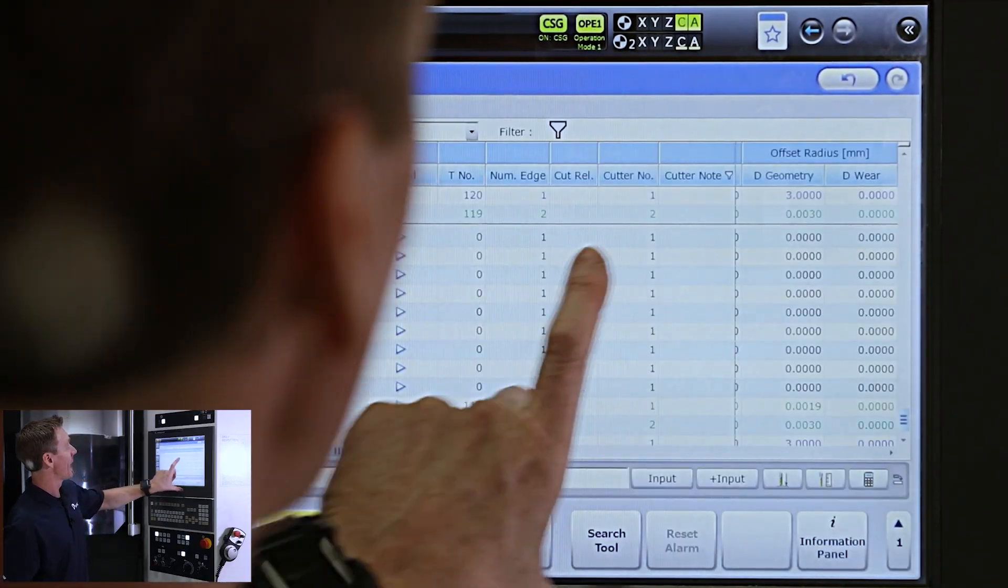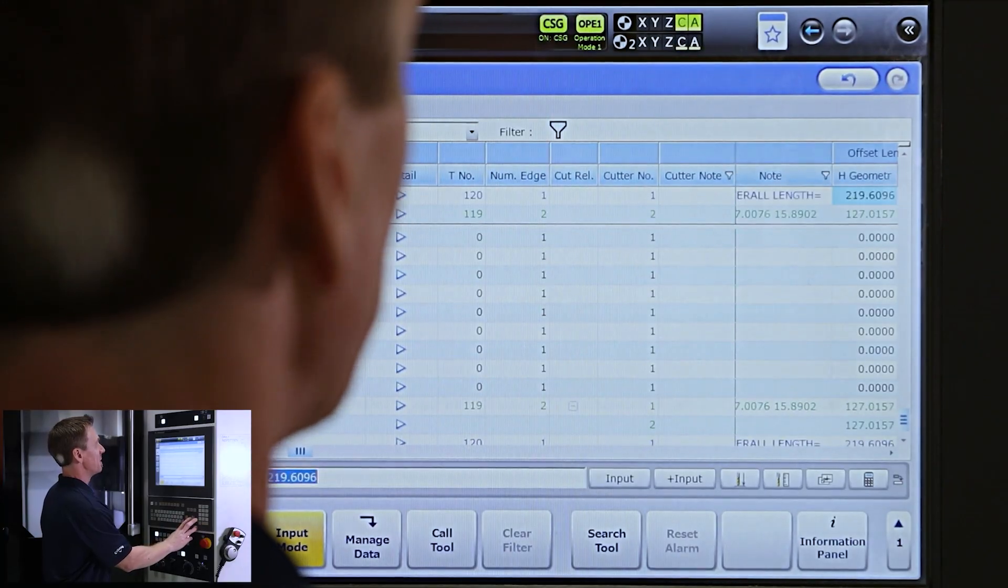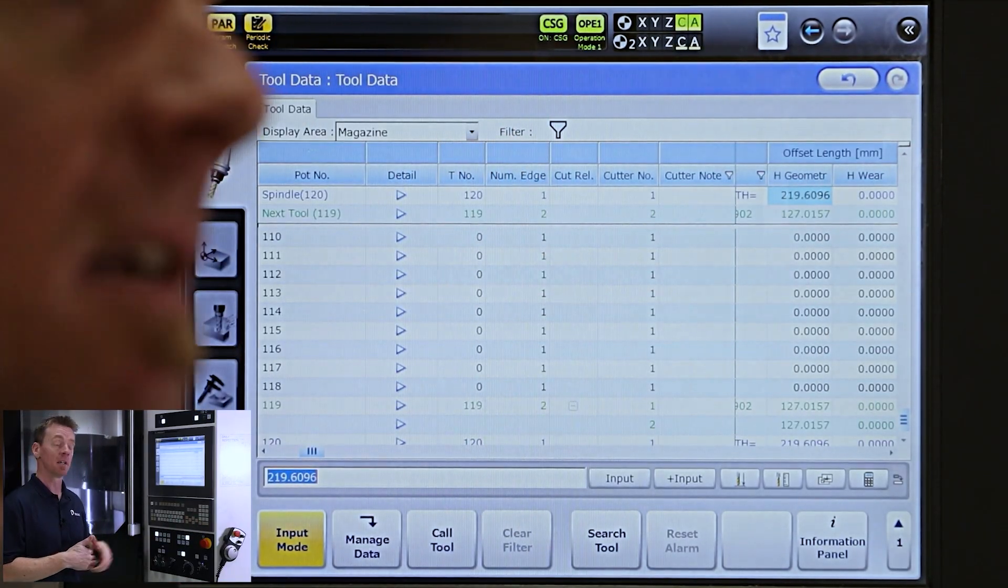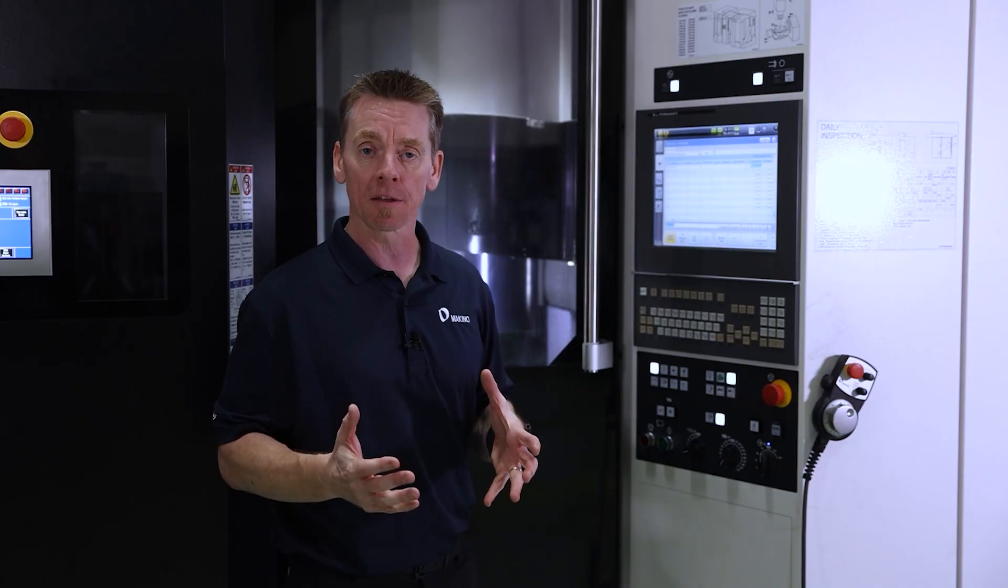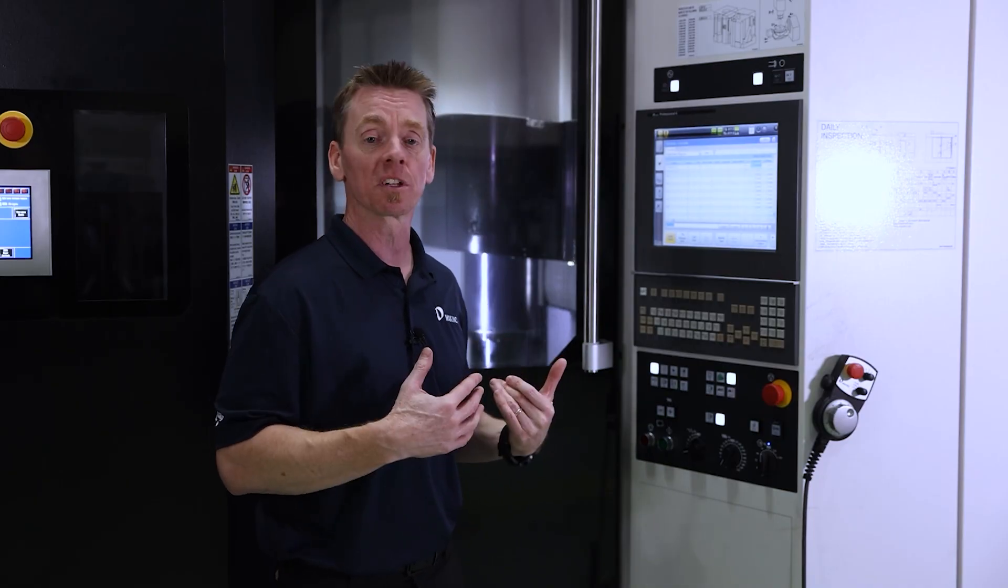When that's completed, we can go back. We can see now that our probe length has been changed. And obviously you want to write down the number it was previously and compare it to the number that you have now. After we complete the calibration of the probe length, we're going to move on to the calibration of the probe in the X and Y. This one's much easier.